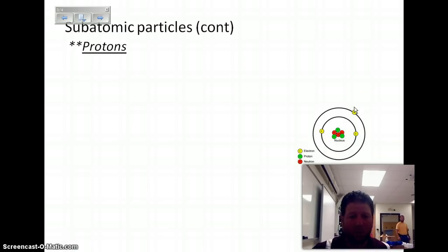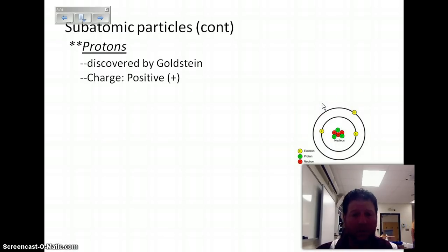The second particle is the proton. They were discovered by Goldstein, and they have a charge that is positive. So, electrons negative, protons positive.